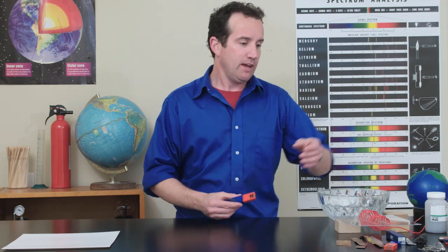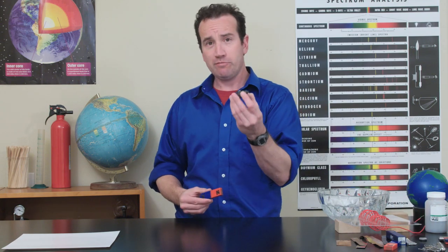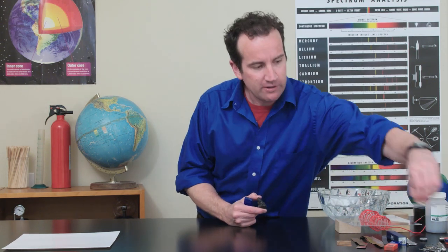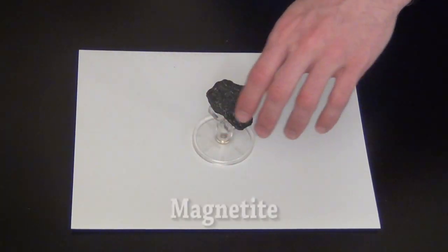Now, I said earlier that iron was what was in a magnet almost all the time. And I have some raw iron that came from the ground. This particular type of iron is called magnetite.